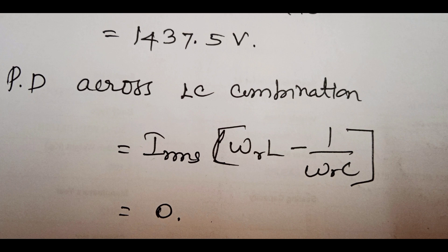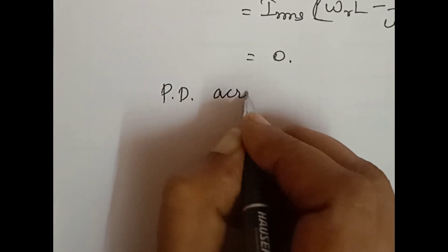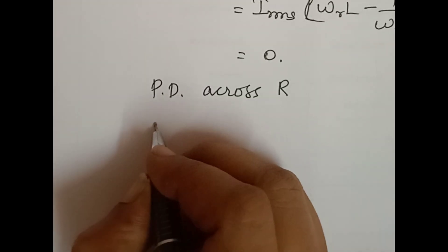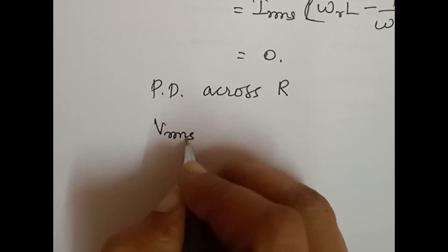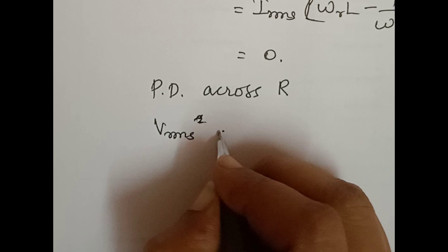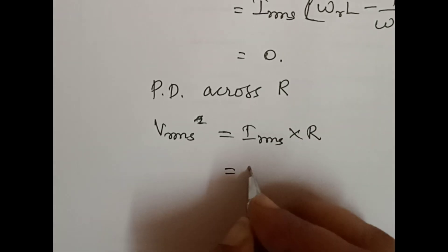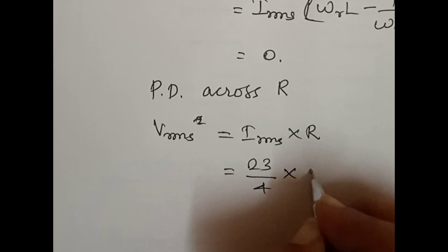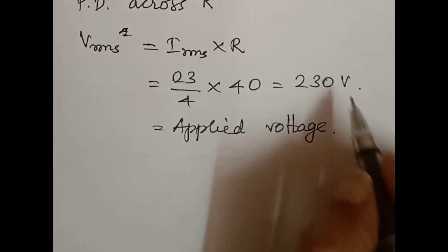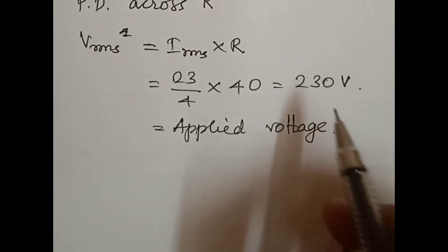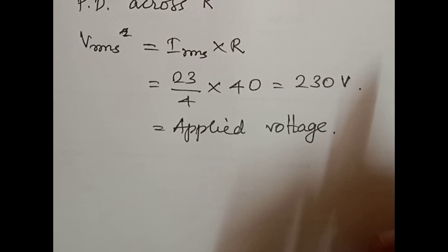For the LC combination, Vrms equals Irms into (Omega R L minus 1 by Omega R C). At resonance condition, Omega R L equals 1 by Omega R C. Therefore, Omega R L minus 1 by Omega R C equals zero. So the potential difference across the LC combination is zero. The potential difference across R equals Irms into R, which is 23 by 4 into 40, equal to 230 volts.